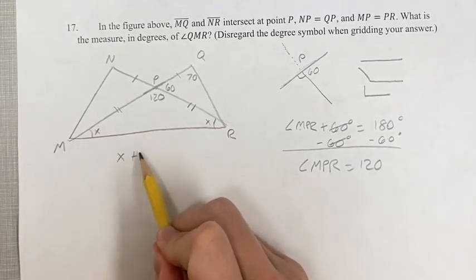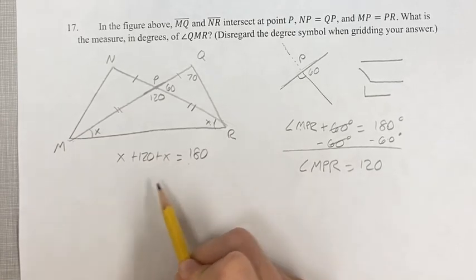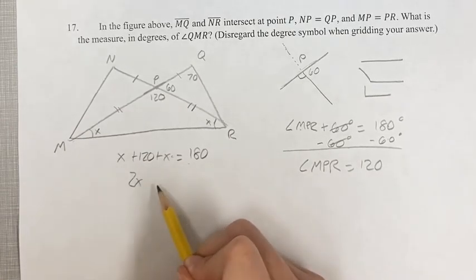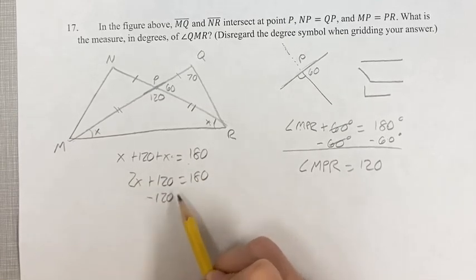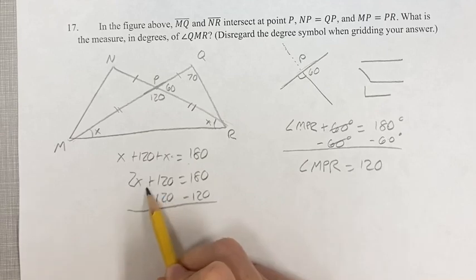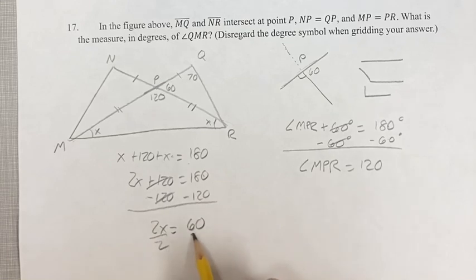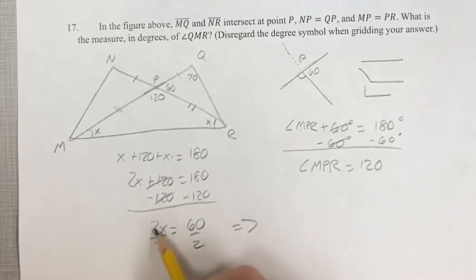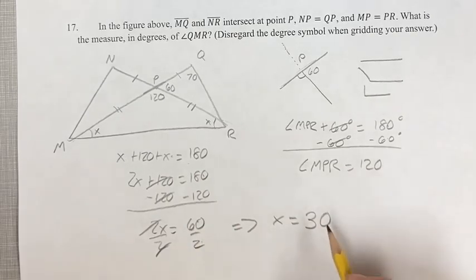So X plus 120 plus X has to equal 180. X plus X is 2X, so 2X plus 120 equals 180. If we subtract 120 from both sides, these cancel, and you get 2X equals 180 minus 120, which is 60. Divide both sides by 2. You get X equals 60 over 2, which equals 30.